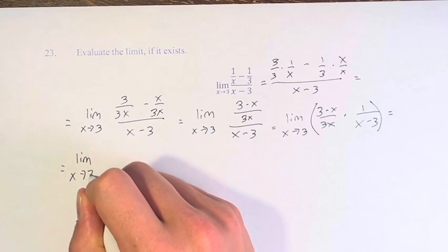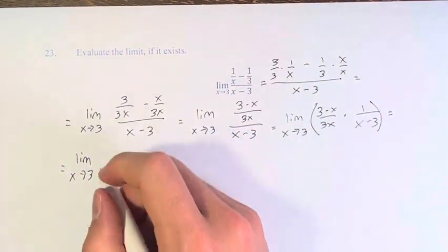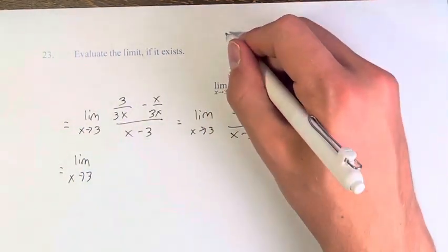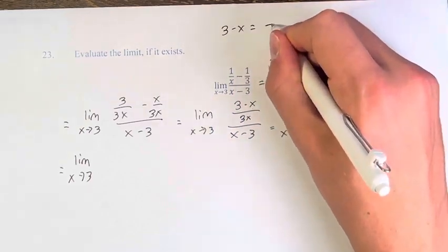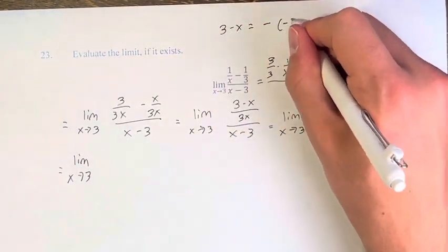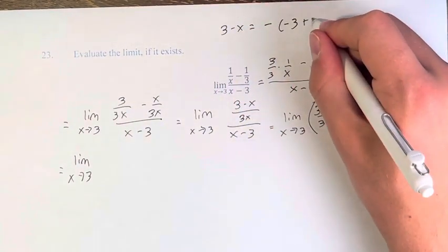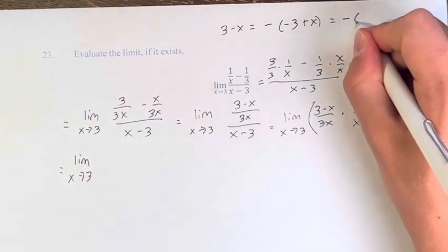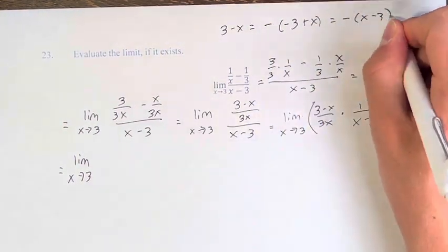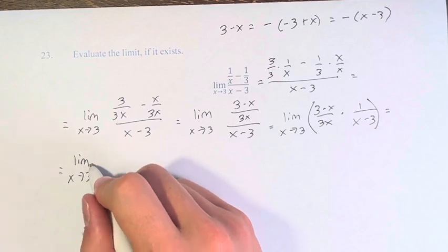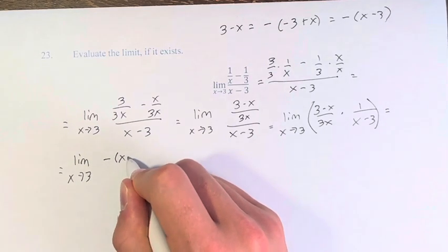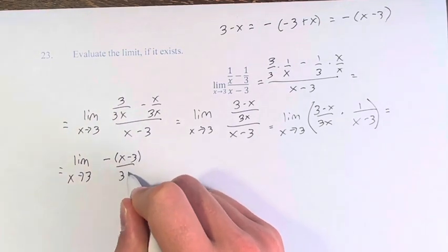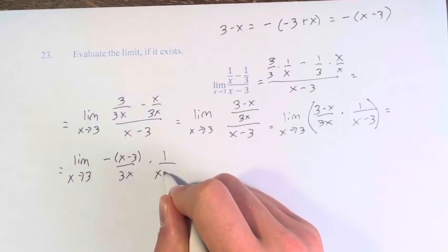Our next step is to say 3 minus x is equal to negative, factoring out negative 1 from these, negative 3 plus x, or negative, rearranging these two terms, x minus 3. So this is negative x minus 3 over 3x times 1 over x minus 3.